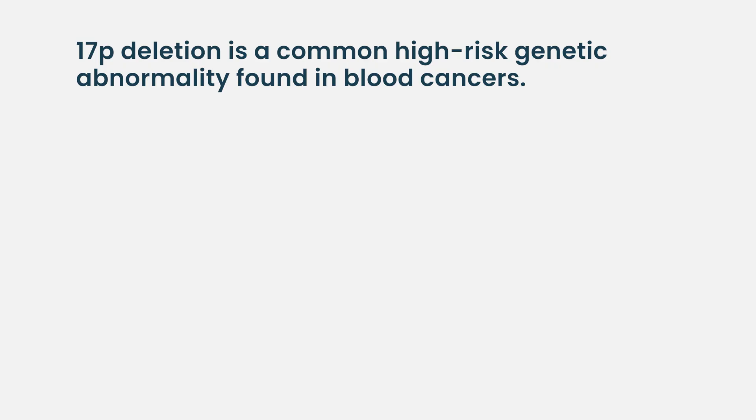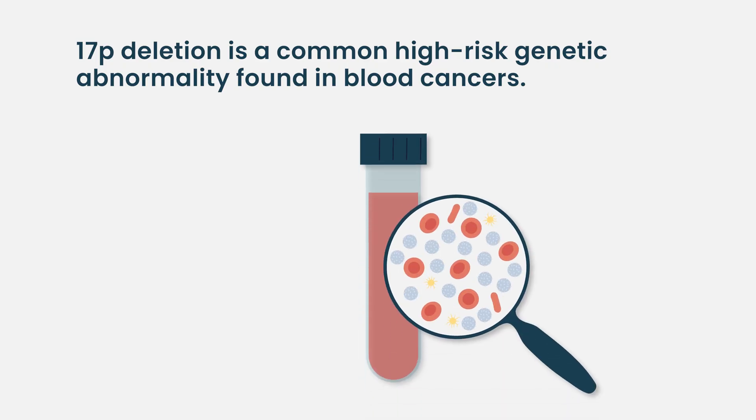If you're missing P53, you can't repair the DNA, and that leads to genetic instability, which results in more aggressive cancers. Minus 17P is considered prognostically adverse and severe in multiple myeloma, but the same is true in leukemia, lymphoma, and chronic lymphocytic leukemia. Minus 17P is bad for all forms of hematologic cancer.